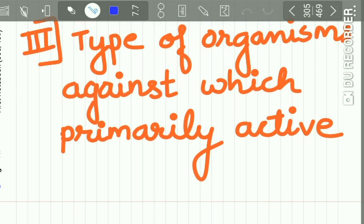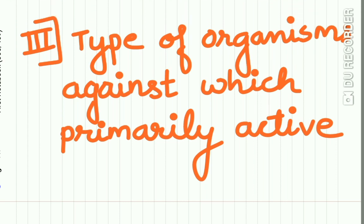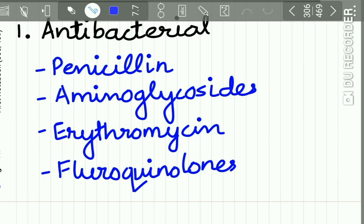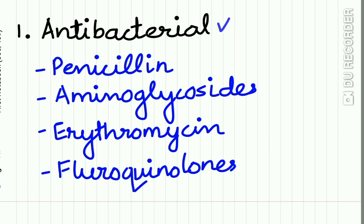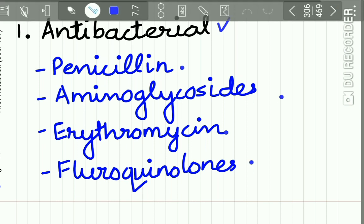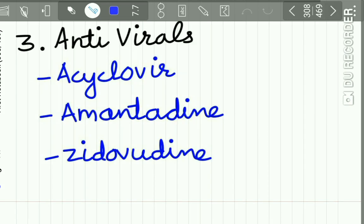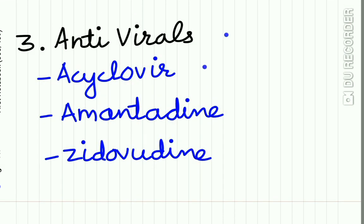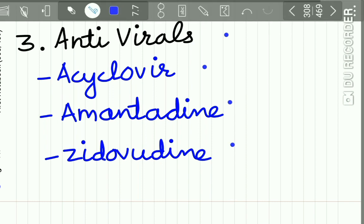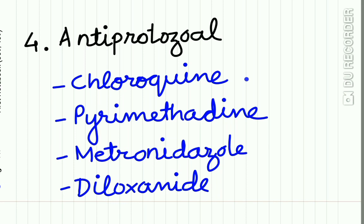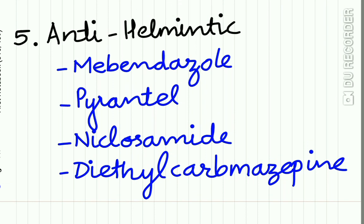The third system of classification is by the type of organism against which the drug is primarily active. Antibacterial drugs include penicillin, aminoglycosides, erythromycin, and fluoroquinolones. Antifungal agents include griseofulvin, amphotericin B, and ketoconazole. Antiviral drugs include aciclovir, amantadine, and zidovudine. Antiprotozoal drugs include chloroquine, pyrimethamine, metronidazole, and diloxanide. Anti-helminthic drugs include mebendazole, pyrantel, niclosamide, and diethylcarbamazine.